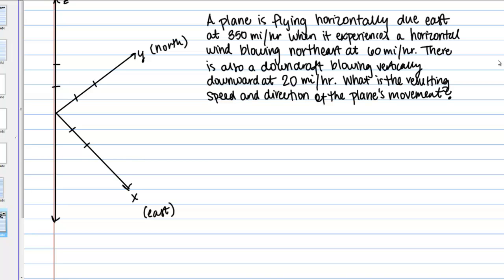This plane is flying due east so solely in the east direction at 350 miles per hour. 350 is going to be the magnitude of that vector. Here I've drawn a vector to represent that movement. I'm going to label that V sub P to represent the velocity of the plane just on its own when there's no wind.